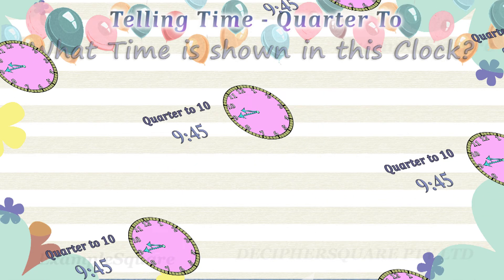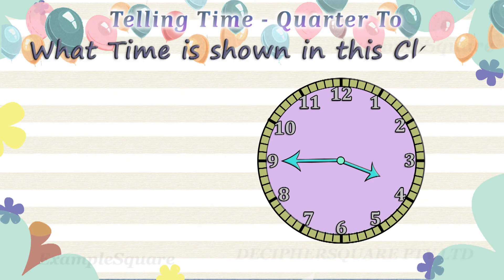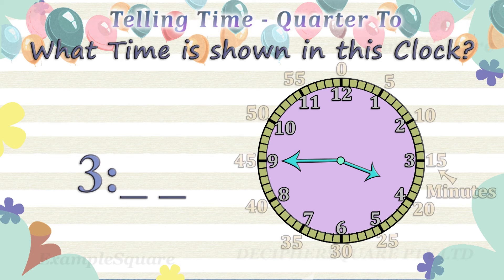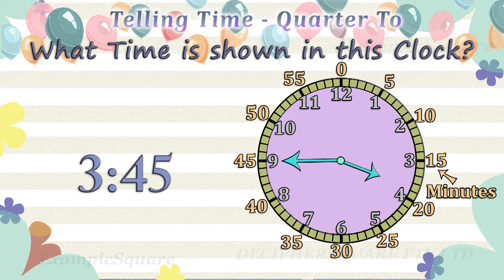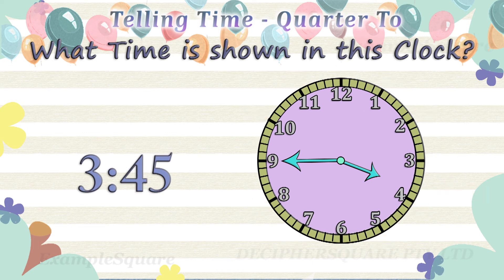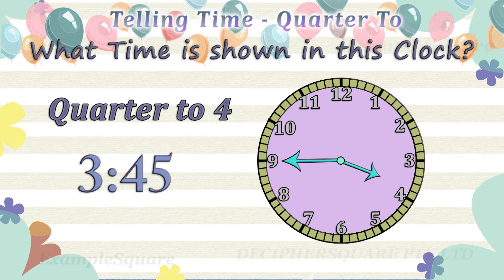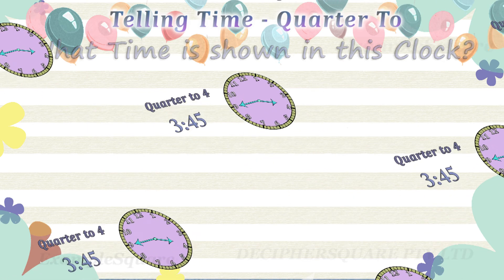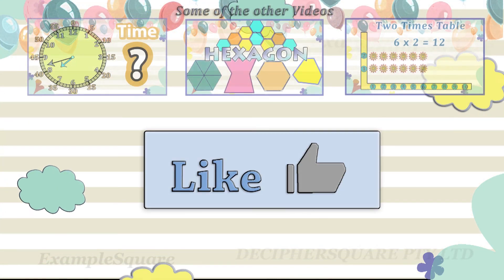What time is shown in this clock? The hour hand is pointing in between 3 and 4, so the time is 3 hours and some minutes. The minute hand is pointing at 9, referring to 45 minutes. The time is 3:45. It is 15 minutes to 4, or quarter to 4.